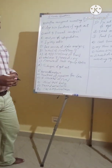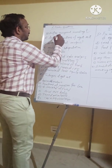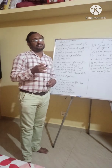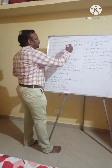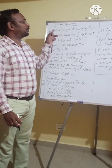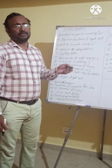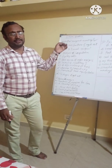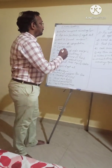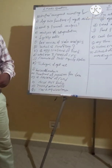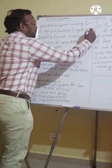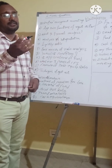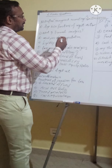Usually the two-mark question is like this: 'What is management accounting?' or 'Define management accounting.' This question is common for all question papers. If you refer to the previous four-year question papers, this question is likely very important. The second question is functions of management accounting — it may come for five marks or two marks.